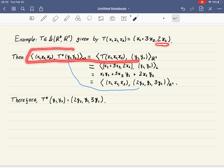As I said in the previous slide, the adjoint is characterized by this relationship: if this equality holds for every x₁, x₂, x₃ and every y₁ and y₂, then we have found what T*(y₁, y₂) is.